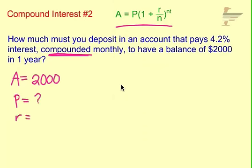R is our rate as a decimal. So it's 4.2. We just bring that decimal over two spots to get 0.042. N is the number of compounds in a year. Compounded monthly, that's going to be 12 times in a year. So N equals 12. And T is time. How many years are we talking? We're just looking at one year.